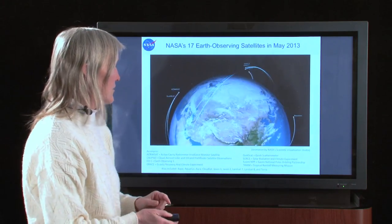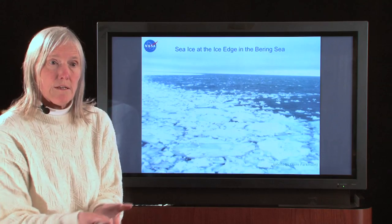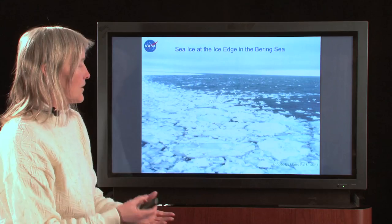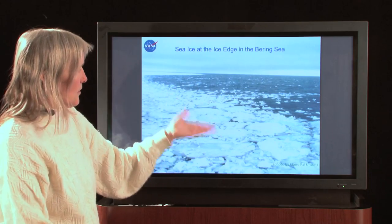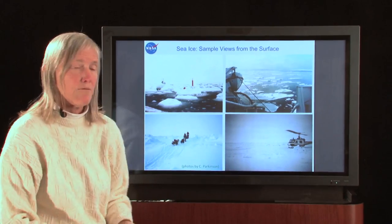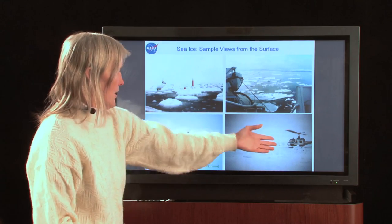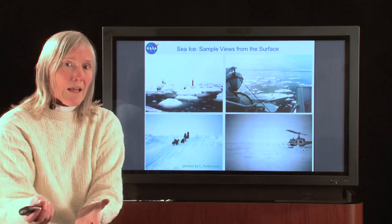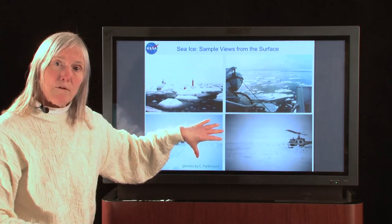Since my specialty is sea ice, I want to first show you what sea ice is. Sea ice is ice that's in the sea — it was formed by the freezing of seawater, and it's floating around. It moves around because the winds and currents push it. This is a typical picture at the edge of the sea ice. Sometimes the sea ice floe is really big and solid enough that you can land a helicopter on it — you can even land a plane if the floes are big enough.